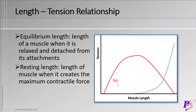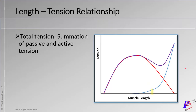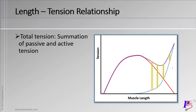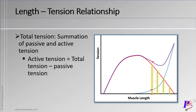If we put passive and active tension together with the equilibrium length, this is their relationship graphically. To derive total tension, we add passive tension to active tension. We draw a line from the x-axis to the passive tension line, then move it up to the active tension line, draw a point at the top, and connect those points — that gives us the total tension curve. They usually derive active tension by measuring total tension and then subtracting passive tension from it.